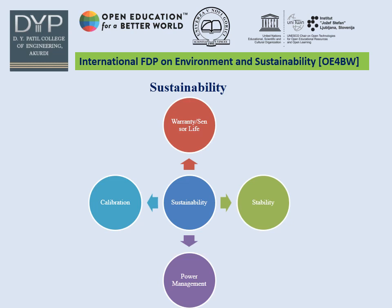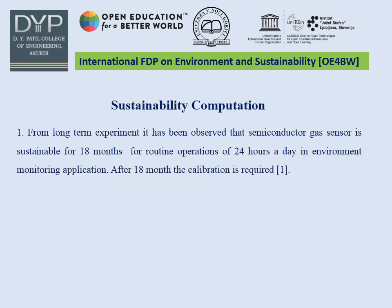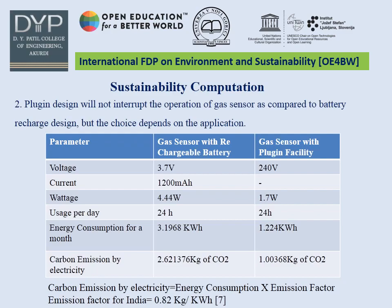There are different options available for powering the gas sensor. The first option is use of a pair of dry cells, the second option is plug-in facility, and the third option is use of rechargeable lithium-ion batteries. For sustainability computation, it has been observed that the semiconductor gas sensor is sustainable for 18 months for routine operation of 24 hours a day in environment monitoring application. After 18 months, calibration is required. A gas sensor with rechargeable battery has a specification of voltage 3.7V and current rating 1200 mAh, giving a wattage of 4.4W.